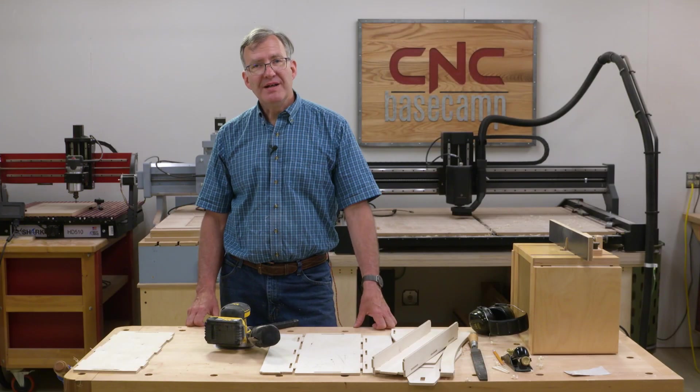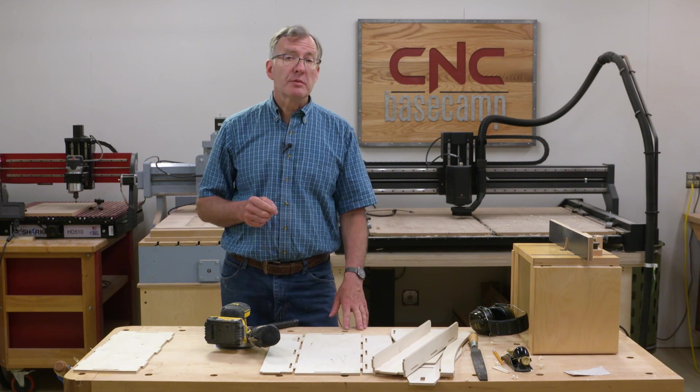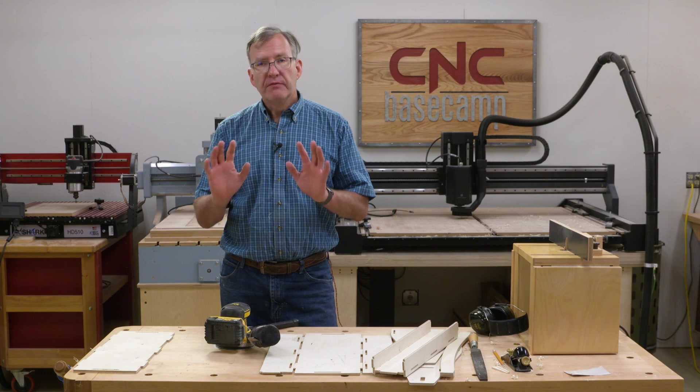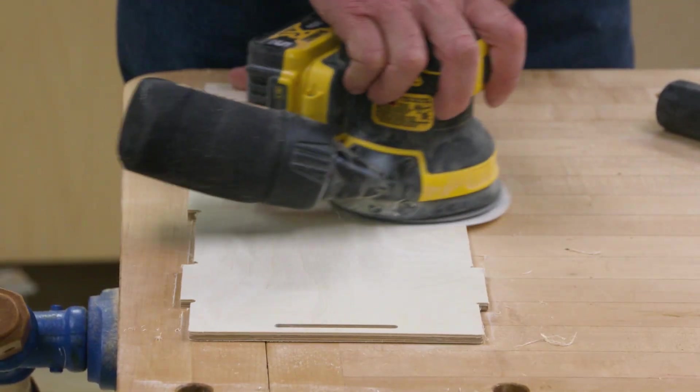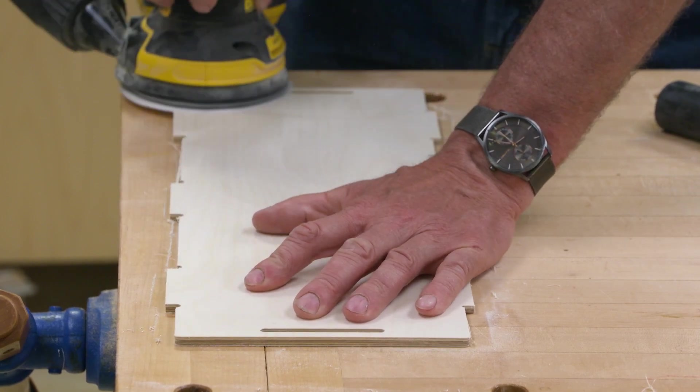Well, our CNC work is done. So now it's time to start assembling all of our totes. So let me run through the procedure with you real quick. First off, all of our parts are going to have a little bit of fuzz on them. So I'm just going to take a random orbital sander and clean them up a little bit.